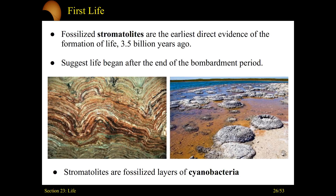One implication is that life became stable and started to propagate around this planet shortly after what's called the bombardment period. Early in a planet's life — going back to the accretion idea, where planets accreted out of material that didn't fall into the protostar — you had an accretion disk. As protoplanets swirled around, clearing their neighborhoods, there was this bombardment: material crashing onto the planet's surface. The timeline suggests that once the surface stabilized and new material wasn't constantly being dumped on it, life could finally reach a stable point and start to propagate.